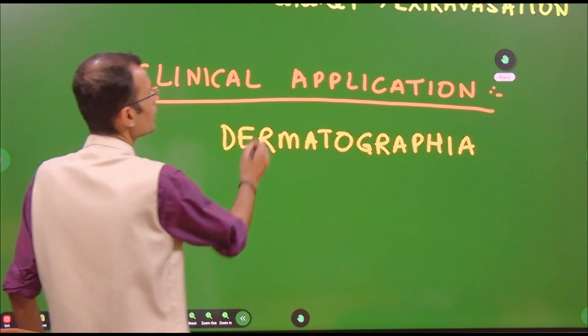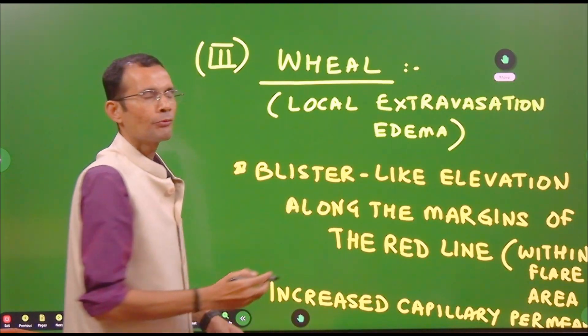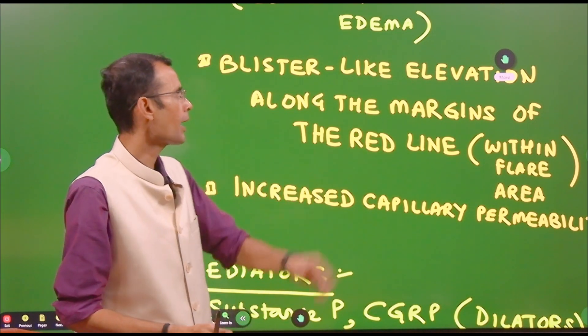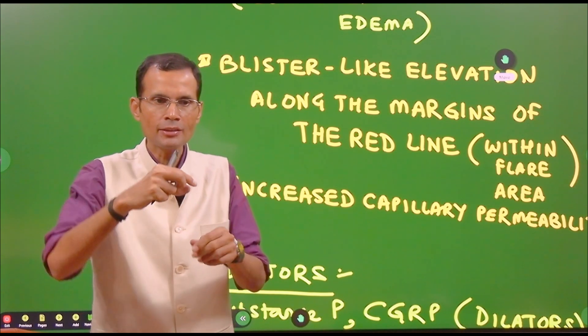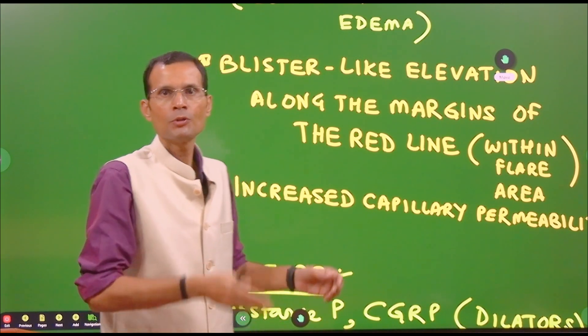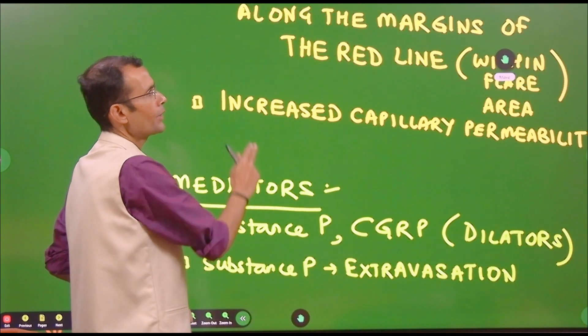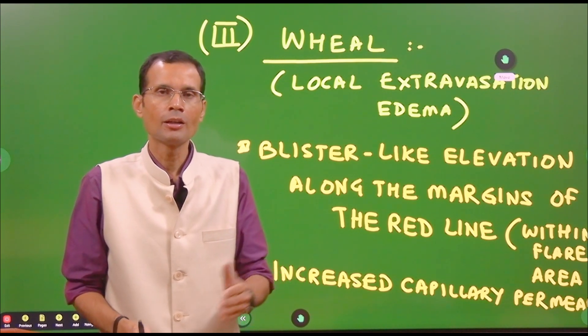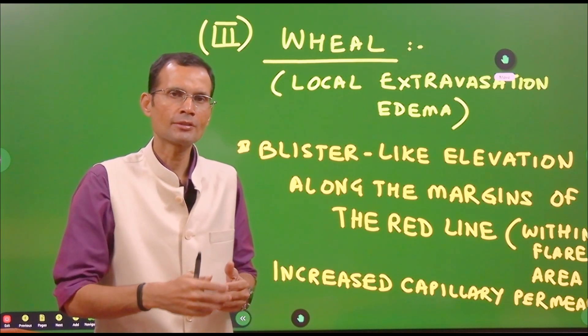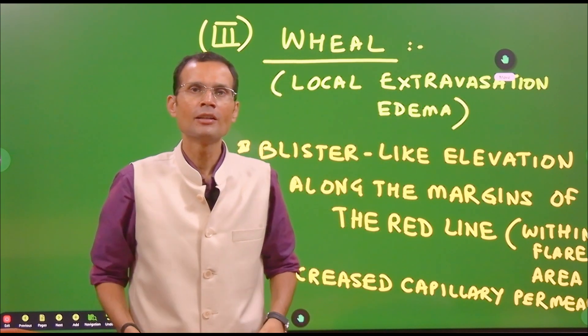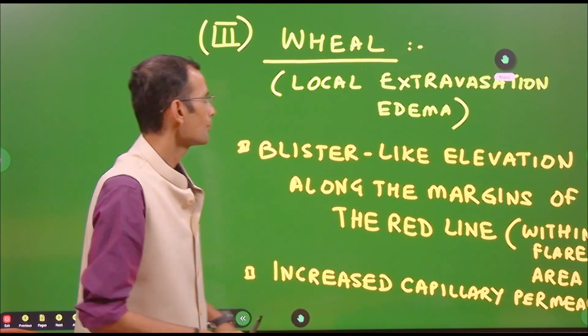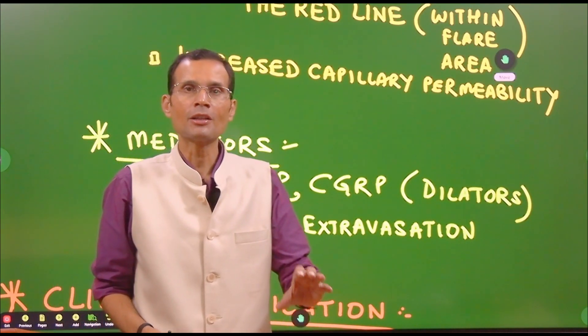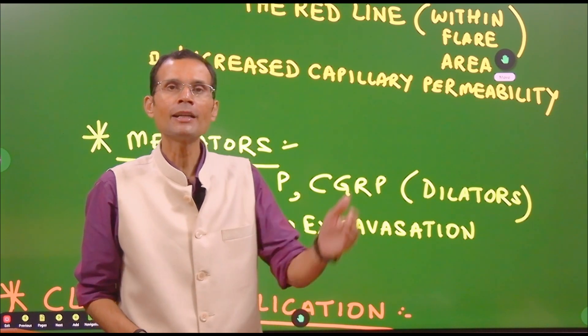The third reaction is called as wheel. Wheel means an edematous elevation, a blister-like elevation along the margins of the red line. Within a few minutes, you will see that there is an elevation, edematous elevation along the line which was drawn. That is wheel. It is because of the local extravasation. What is extravasation? Leaking of the fluid out of the capillaries, out of the vessels. Vassation means vessels, extra means outside. Fluid leaking out of the blood vessels. And therefore, a small edema formation along the line. This is because of increased capillary permeability.